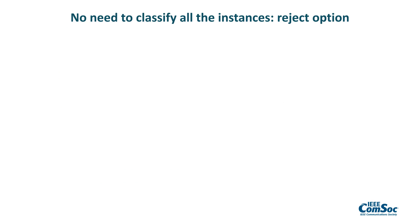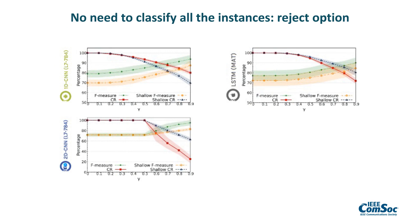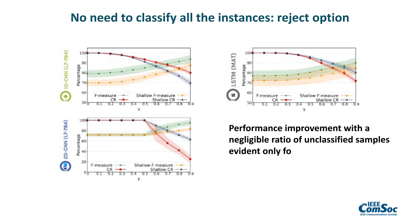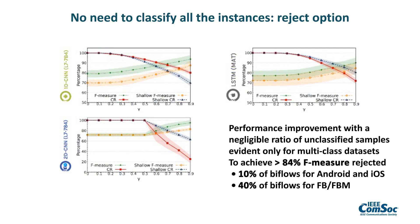Moreover, we consider an evaluation setup in which we censor the classification of samples with a class prediction probability lower than a certain threshold gamma. We can notice that, for both multi-class datasets, we can obtain a significant performance improvement at the cost of only a negligible ratio of unclassified samples. For instance, to achieve more than 84% F-measure, only 10% of bidirectional flows are rejected.